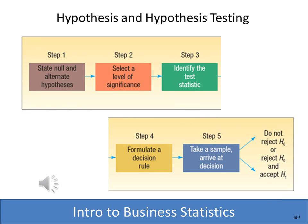Hypothesis testing is the procedure in which I take a sample and then analyze or test the result to see whether my hypothesis can be accepted or rejected. The hypothesis testing procedure actually has five steps, and we're going to spend a little time on this because it's incredibly important. The first step is to state the null and alternate hypothesis. The null hypothesis is what's assumed to be true; the alternate hypothesis is what you are trying to prove. Then you're going to select a level of significance.